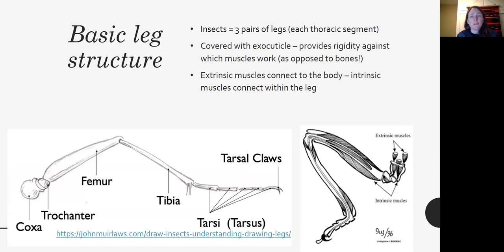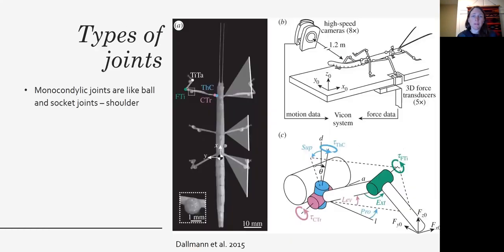Their muscles, they either have extrinsic muscles which connect the leg to the body, or they have intrinsic muscles that connect the different parts of the leg. And at the joints, the cuticle is soft and flexible, which allows it to move a little bit easier.